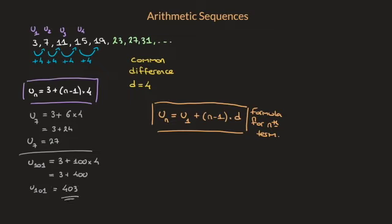Let's quickly look at another example. In example 1, the amount we were always adding was positive. So let's look at a second example in which the common difference is negative. Say I have the sequence 22, 19, 16, 13, 10, and so on.